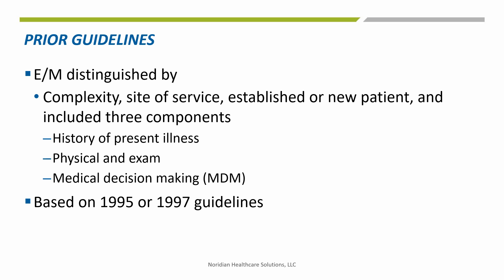CMS and the AMA listened and wanted to streamline the regulations, with the intent to increase provider time with patients and follow the initiative Patients Over Paperwork, designed to decrease provider and administrative burden and improve payment accuracy. Prior to 2021, all E&M guidelines were distinguished by complexity, site of service, established or new patient, and included three components: history of present illness, physical exam, and medical decision making. Providers used the 1995 or 1997 guidelines for selecting the proper code.